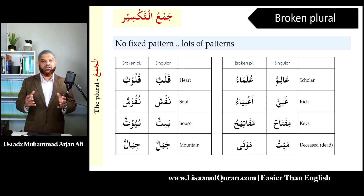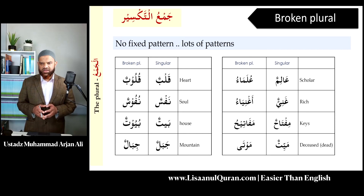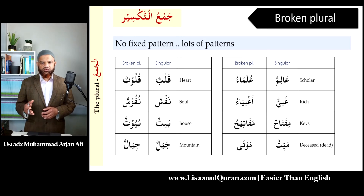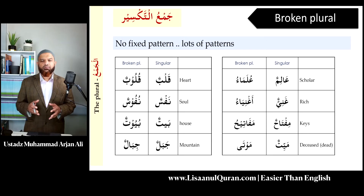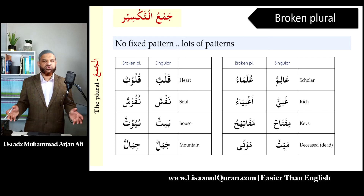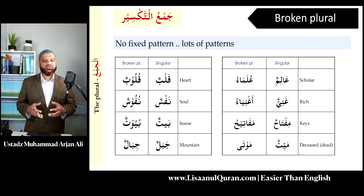The first one is 'alimun', which means a scholar — the plural is 'ulama'u'. Then 'ghaniyun', which means rich — the plural is 'agnia'u'. Then 'miftahun', which means key — keys will be 'mafatihu'. Then 'mayyitun', deceased or dead person — plural is 'mawta'u', a completely different type of ending. 'Qalbun', heart — plural 'qulubun'. 'Napsun', soul or self — 'nufusun'. 'Baytun', one house — 'buyutun', houses. 'Jabalun', mountain — 'jibalun', mountains.